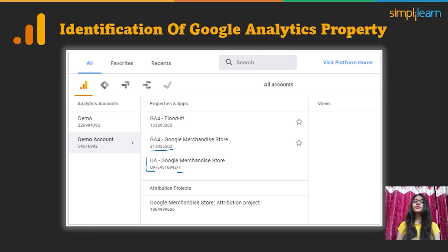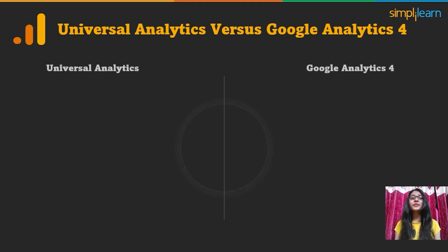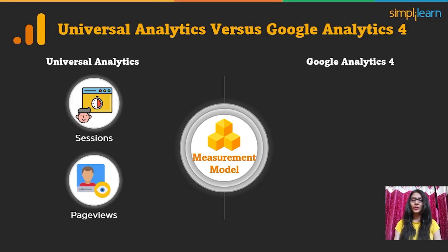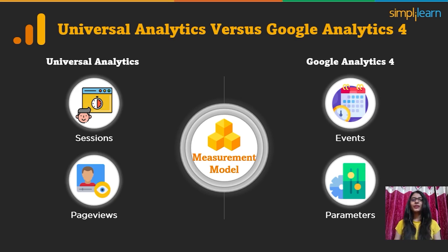We will learn how to switch a Universal Analytics account to Google Analytics 4 in the upcoming videos. Now, let's take a detailed look at the comparison of Universal Analytics data and Google Analytics 4 data. The major difference between the two is the measurement model. Universal Analytics uses sessions and page views as the measurement model, whereas Google Analytics 4 uses events and parameters. Therefore, any hit type from Universal Analytics — such as a page view or user timing — is captured as an event in Google Analytics 4.